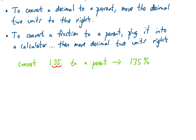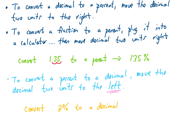Now if we want to go in the other direction — converting a percent into a decimal — what we do is move the decimal two units to the left. So to convert 2% into a decimal, we take the decimal place, which is just to the right of the 2, and move it two units to the left. That gives us an answer of 0.02.